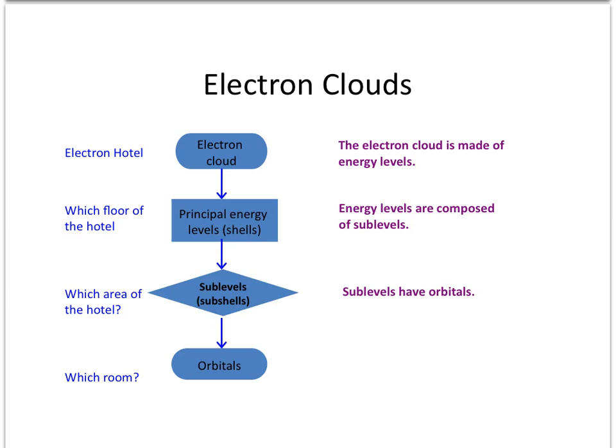Using the hotel analogy, the orbitals would be the actual rooms of the hotel, the sub-levels would be the area of the hotel, the principal energy levels would be the floor of the hotel, and the electron cloud would be the hotel itself.